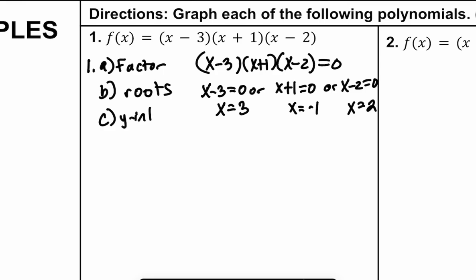Now I also want to find the y-intercept. To find it, plug in zero for x: negative 3 times positive 1 times negative 2 equals 6. So the y-intercept is 6. Technically right now I have four points: the function hits the x-axis at positive 3, negative 1, and 2, and it hits the y-axis at 6. I know a lot of things from this very first step.